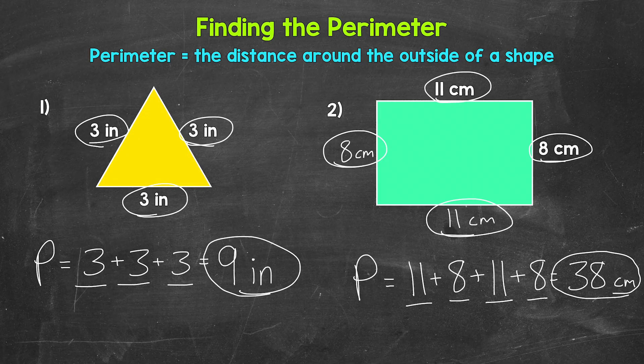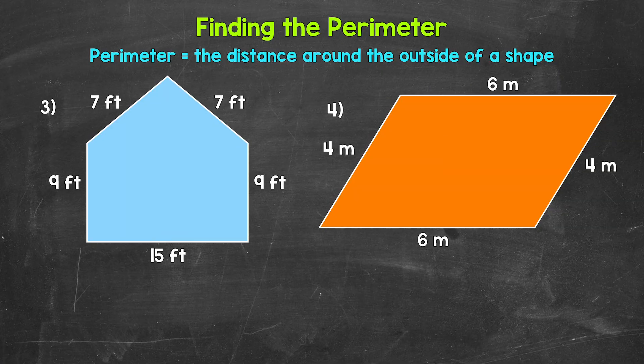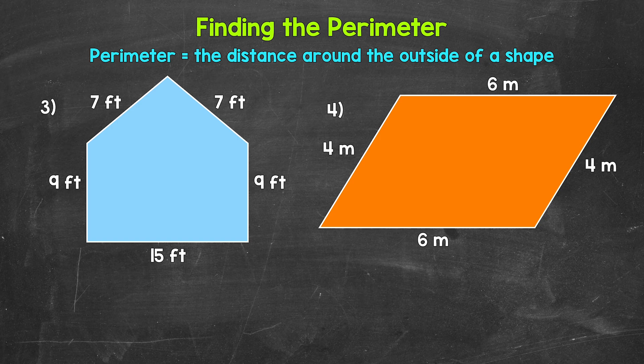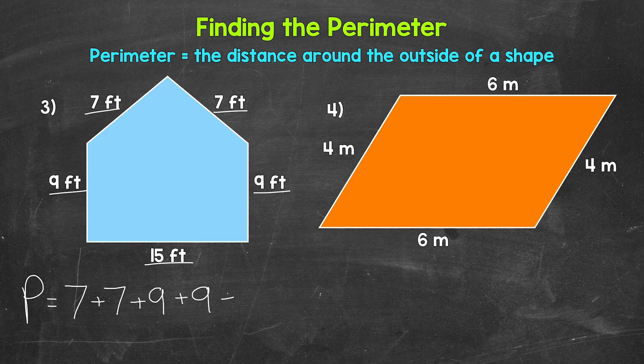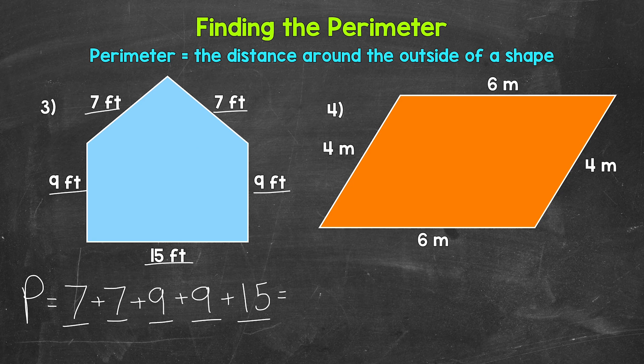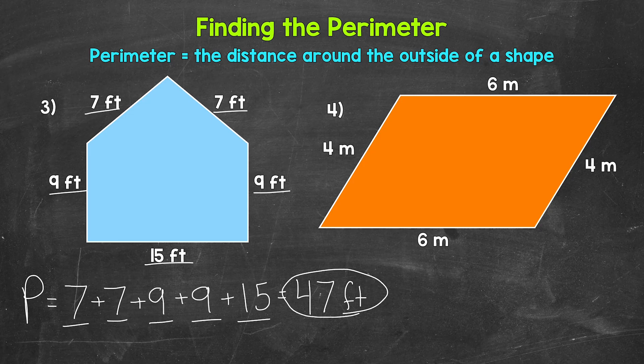Let's move on to numbers three and four. Taking a look at numbers three and four here, let's start with number three, where we need to find the perimeter of that pentagon. So again, we need to add all of the side lengths. We need to do seven feet plus seven feet plus nine feet plus nine feet plus 15 feet. So perimeter equals seven feet plus seven feet plus nine feet plus nine feet plus 15 feet. Seven plus seven is 14 plus nine is 23 plus nine is 32 plus 15 is 47 feet. That's the perimeter, the distance around the outside of that pentagon.